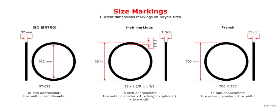Wired-edge tires can be mounted on straight-side or crochet-type rims. Such tires are designated with their nominal width and their nominal rim diameter, separated by a hyphen. Both are measured in millimetres.